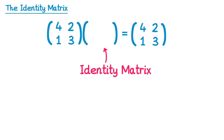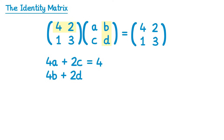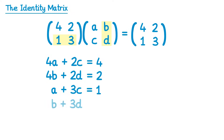Now can we work out this matrix? Let's give it general letters a, b, c, and d, and let's multiply. So four, two times a, c gives us four a plus two c, and this must equal the top left element, four. Then four, two with b, d gives four b plus two d, which equals the top right element, two. Then one, three with a, c gives a plus three c, which must equal the bottom left element, one. And finally one, three with b, d gives b plus three d, which must equal the final element, three.